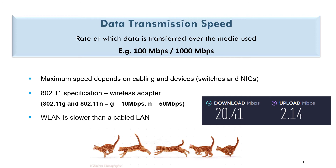If you look at the specification on a network card, you'll usually see 802.11, which tells you how fast the signal can travel with your wireless adapter. Remember that a wireless LAN will always be slower than a cabled LAN, so if you want really fast internet, rather plug a cable from your laptop or computer into your router.